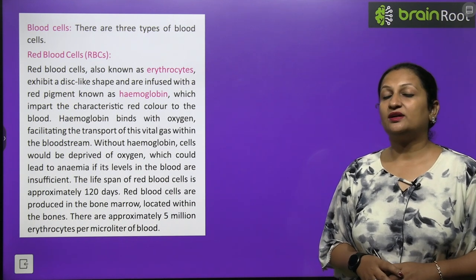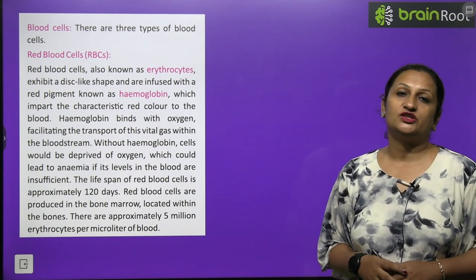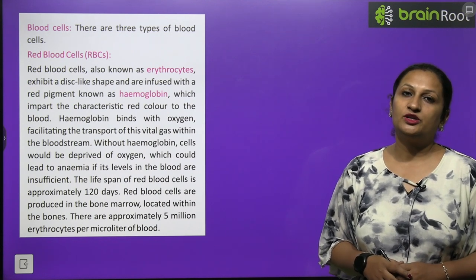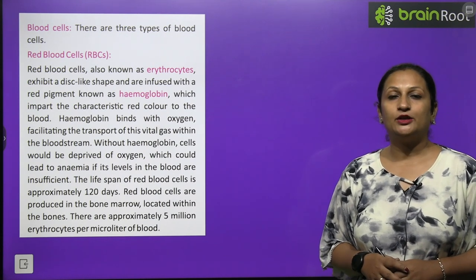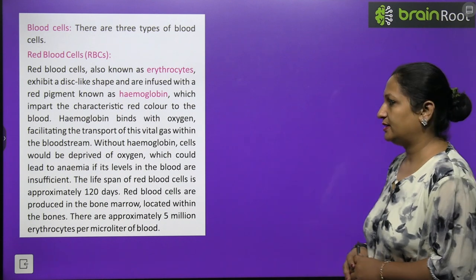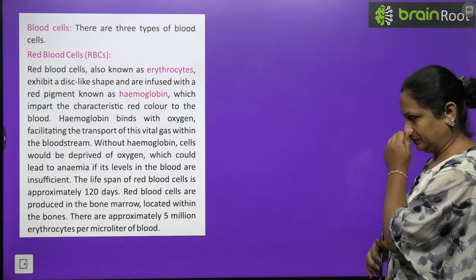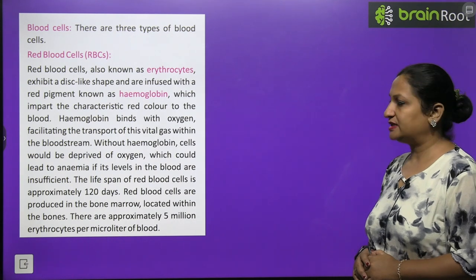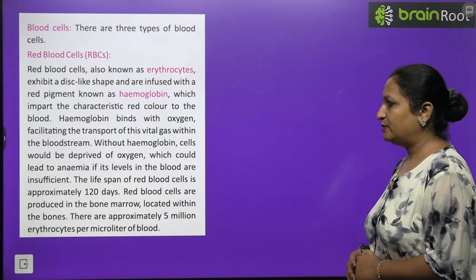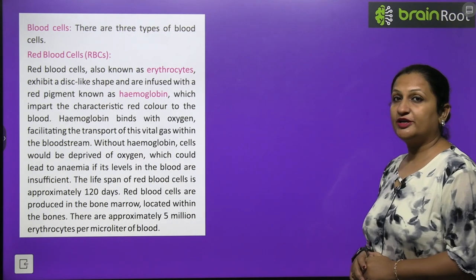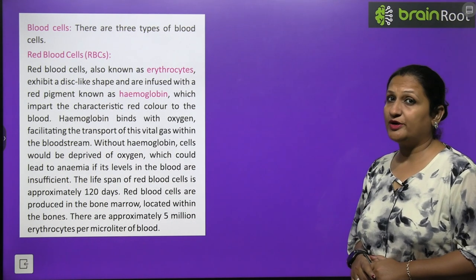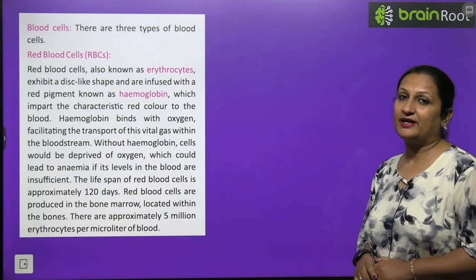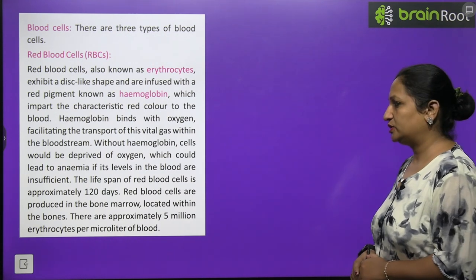Anaemia can be managed by eating green leafy vegetables and increasing protein intake in your diet, which helps normalize hemoglobin levels. The lifespan of red blood cells is approximately 120 days. Red blood cells are produced in the bone marrow.